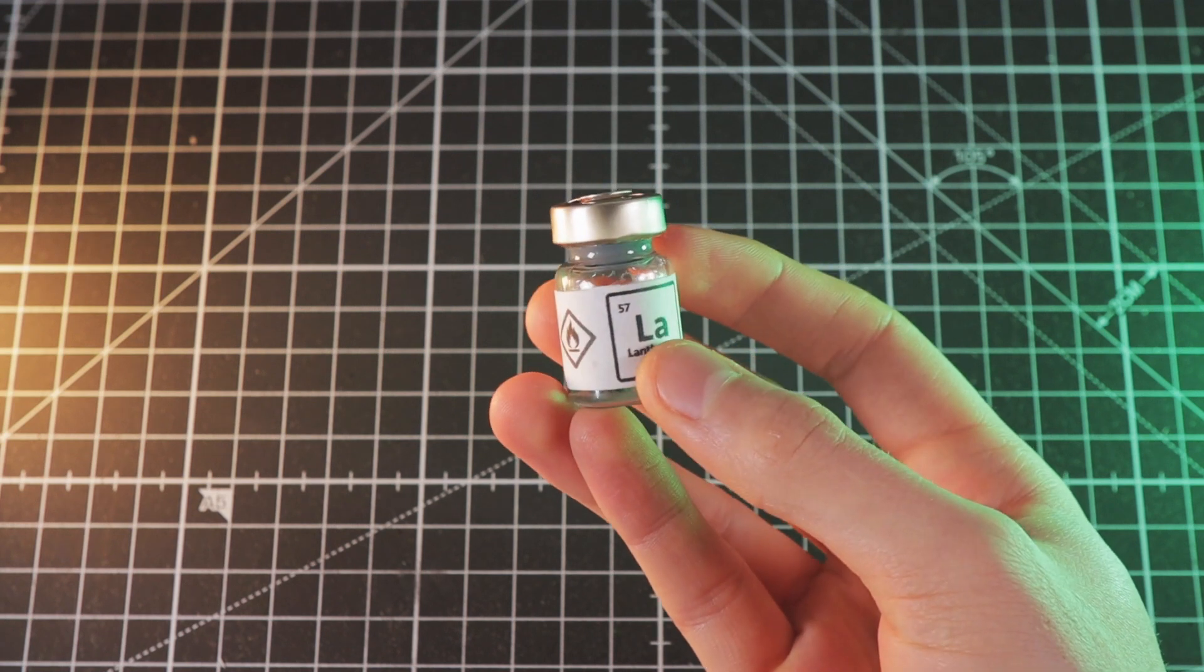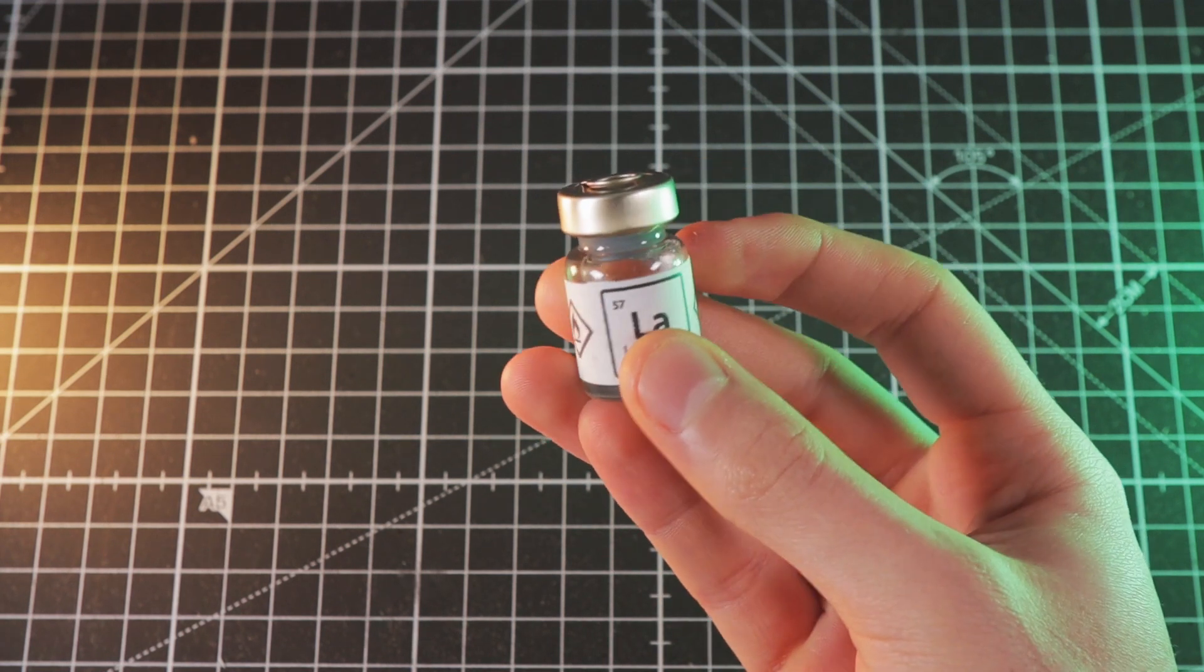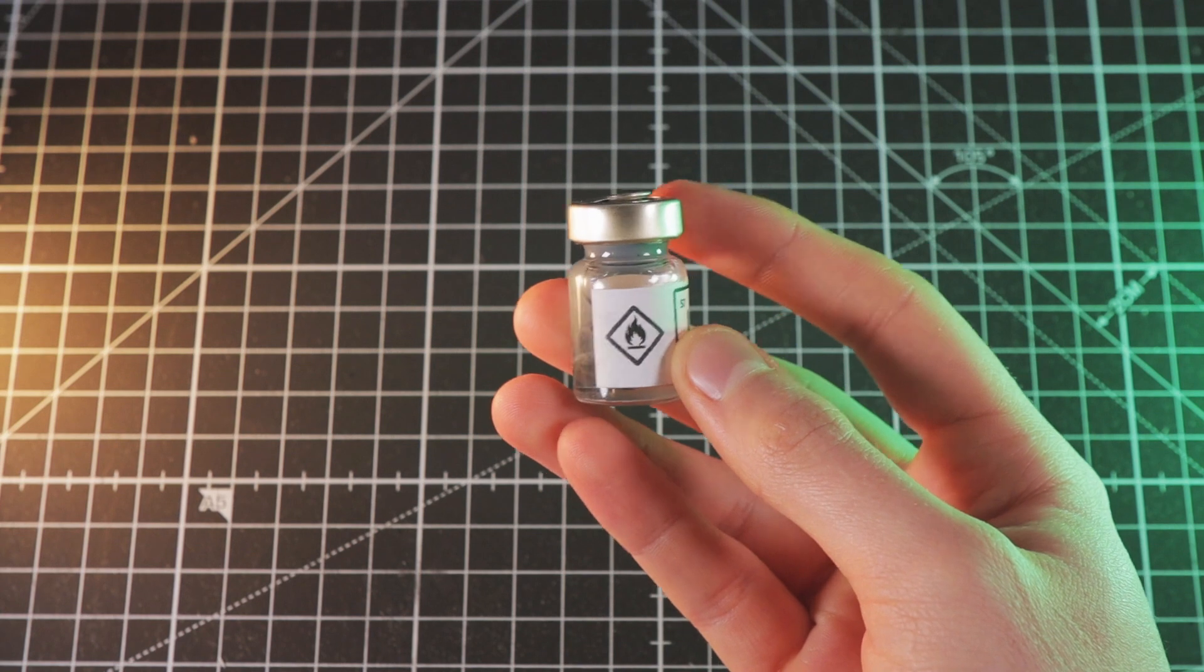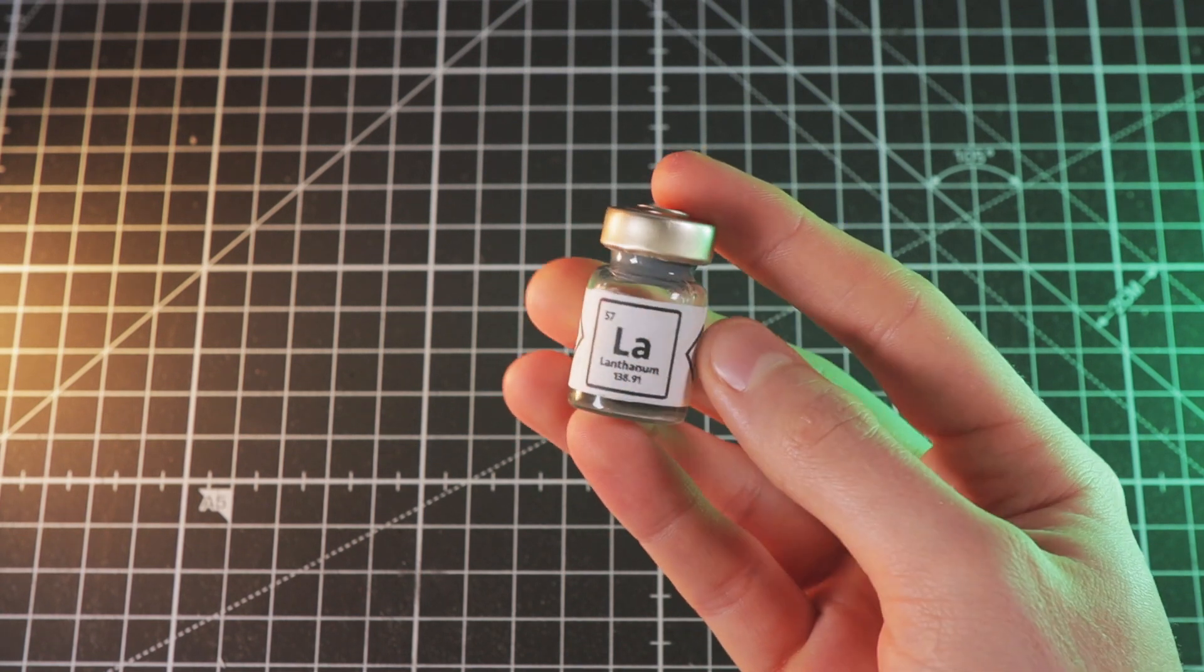It was first discovered by Swedish chemist Karl Gustaf Mosander in 1839, while pure lanthanum wasn't obtained until 1923.